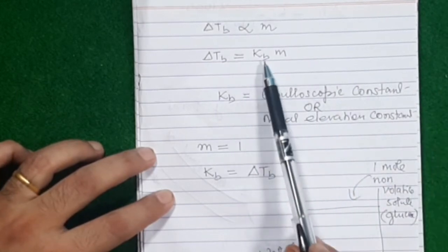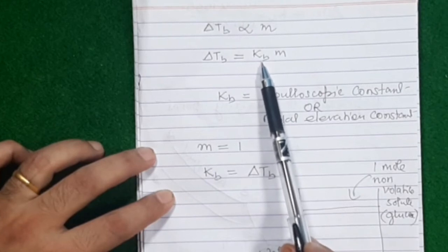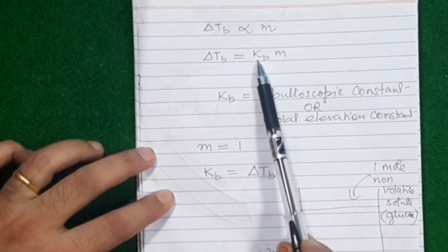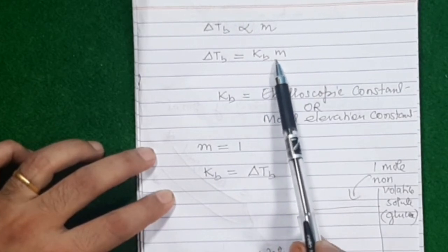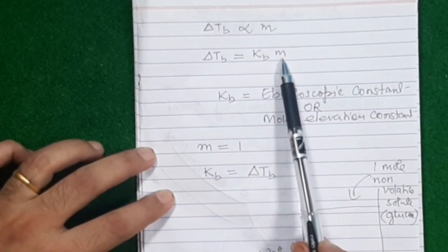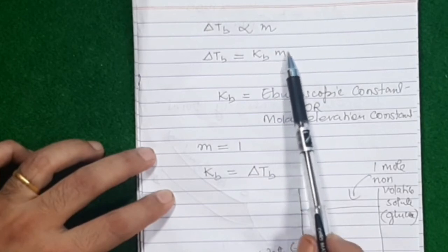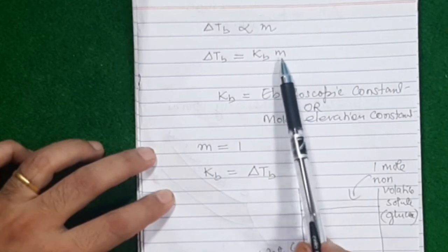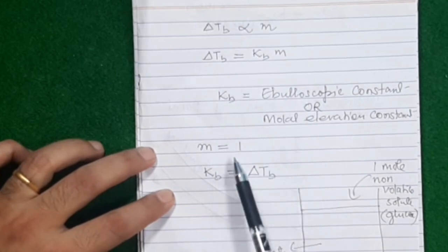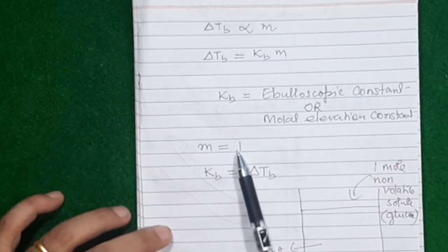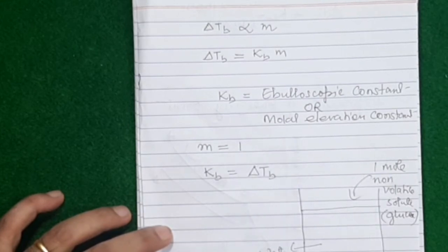To understand the meaning of Kb, assume the molality of the solution is 1. When m = 1, then Kb equals delta Tb. So imagine any liquid converted into a solution of exactly molality 1. For example, to find the ebullioscopic constant of water, I take 1 kg of water — 1000 grams — and add 1 mole of solute, which makes the molality equal to 1.